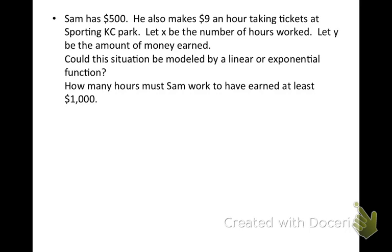Well, every single hour, I make $9, or Sam makes $9. First hour, he makes $9. Second hour, he makes $18. Third hour, he makes $27. So he is going up by $9 each hour. He's adding $9 every single hour he works. So this has to be linear.